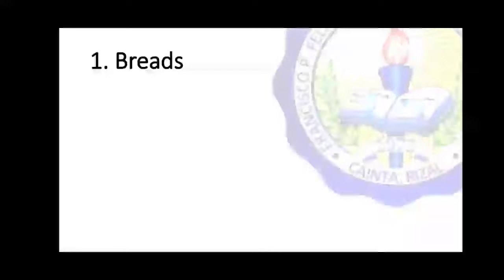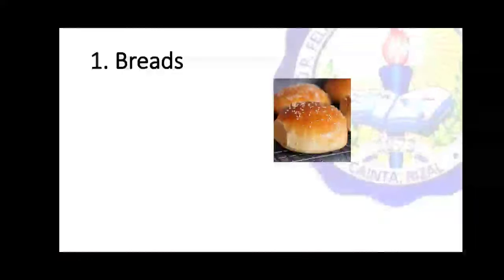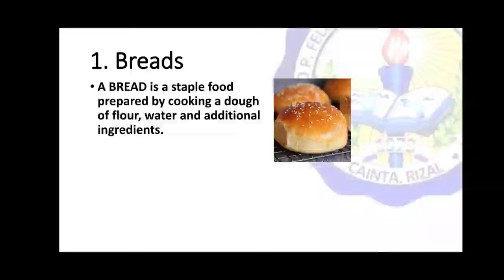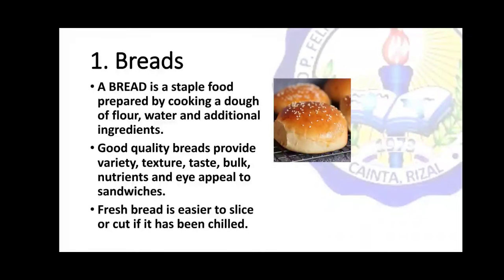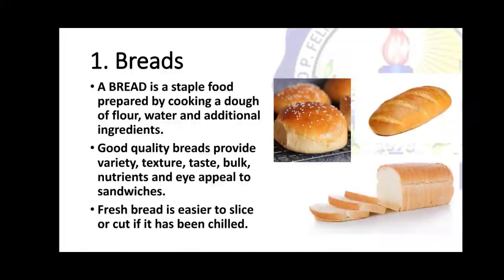The ingredients used for sandwiches — first, we have breads. Bread is a staple food prepared by cooking a dough of flour, water, and additional ingredients. Good quality breads provide variety, texture, taste, bulk, nutrients, and eye appeal to sandwiches. Fresh bread is easier to slice or cut if it has been chilled.